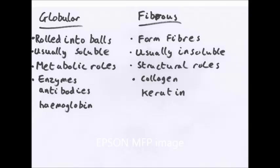There are two main types of tertiary structured proteins: globular and fibrous. Globular proteins are rolled into a ball. They are usually soluble in water and perform generally metabolic roles. They are found in reactions. Enzymes are all globular proteins that catalyze reactions. Examples are enzymes, antibodies, hemoglobin. Fibrous proteins surprisingly form fibers. They're usually insoluble in water and have structural roles. So collagen found in skin, keratin in nails.